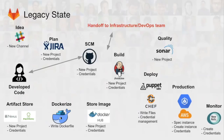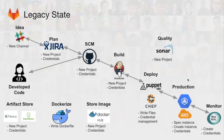We might then hand off that project to the infrastructure and DevOps team. They're going to create a new channel in Slack to help with ideation, and they'll create a new project with the right credentials matched up in JIRA so that we can manage the planning of this project.